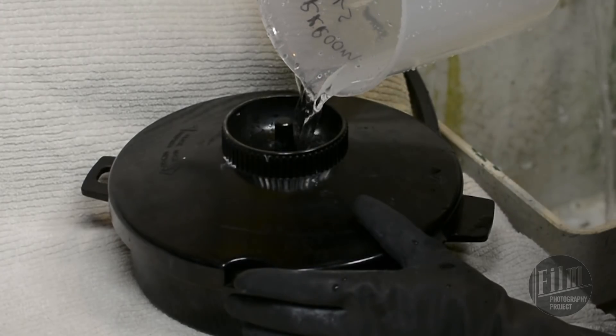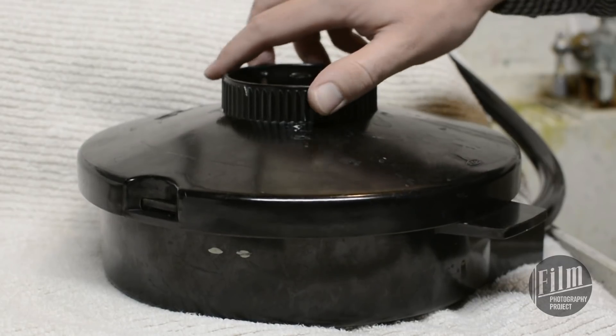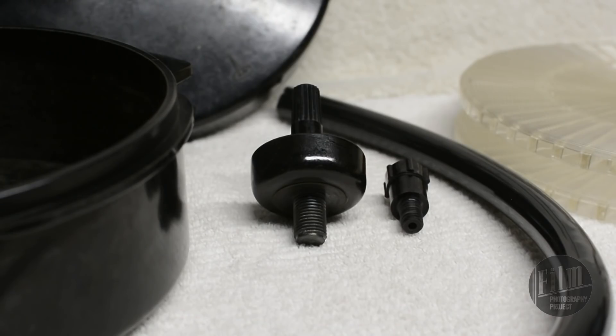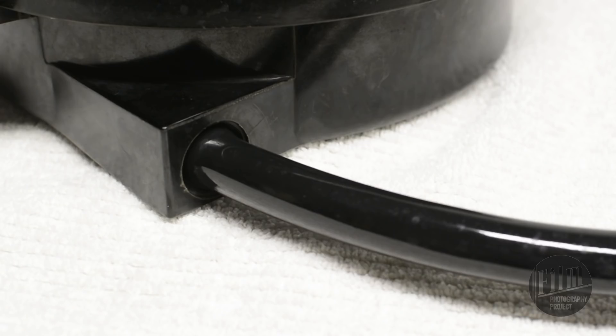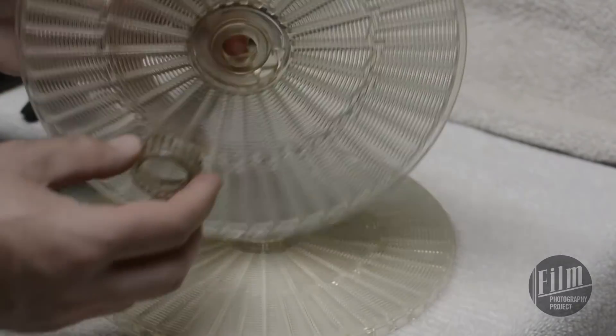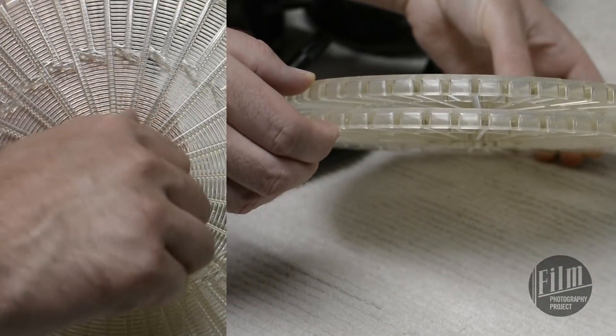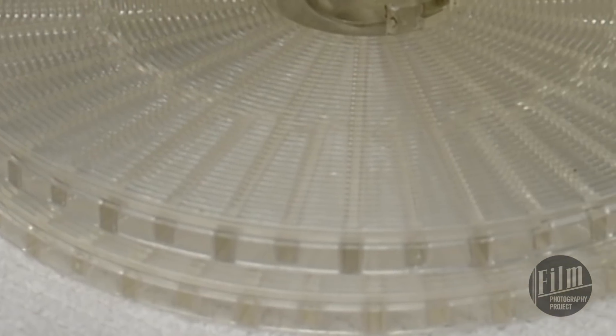These UFO-looking tanks have several parts: a locking lid, an agitator, adjustable reel, and a hose for the chemicals to drain out. The adjustable reel can handle two rolls of regular 8, Super 8, or double Super 8 film. Each reel holds 50 feet of film.